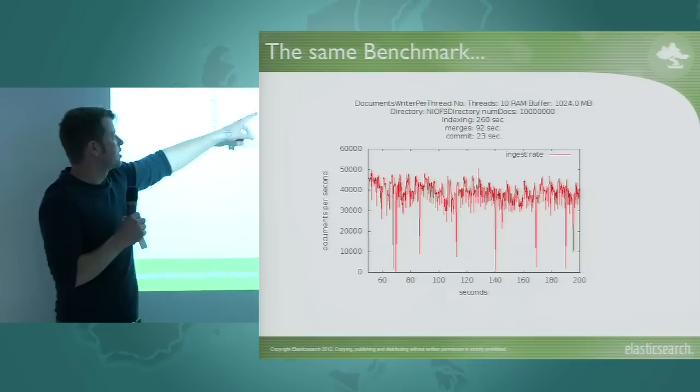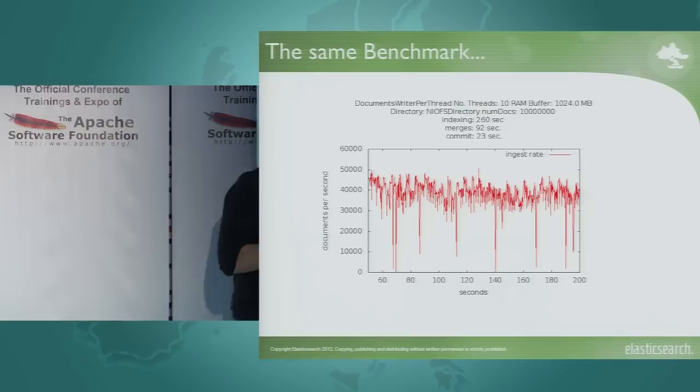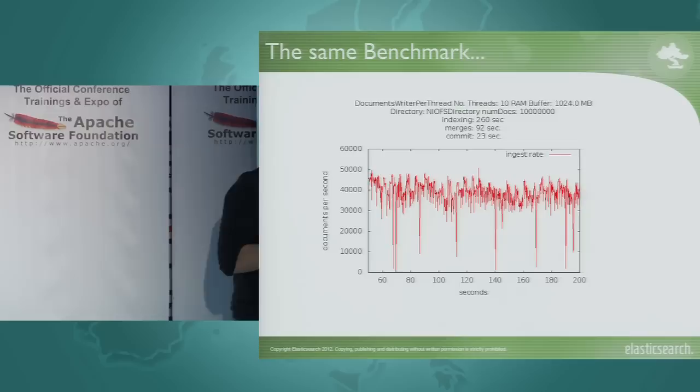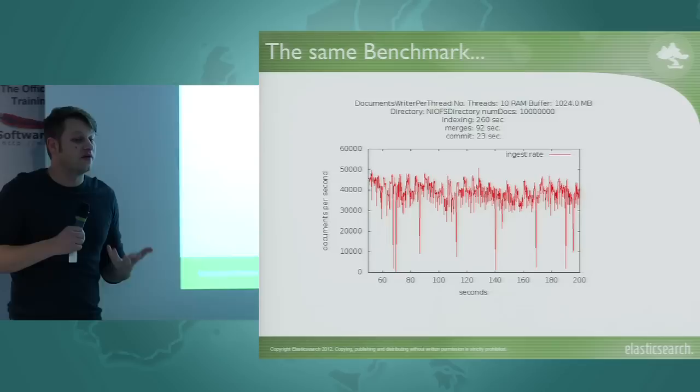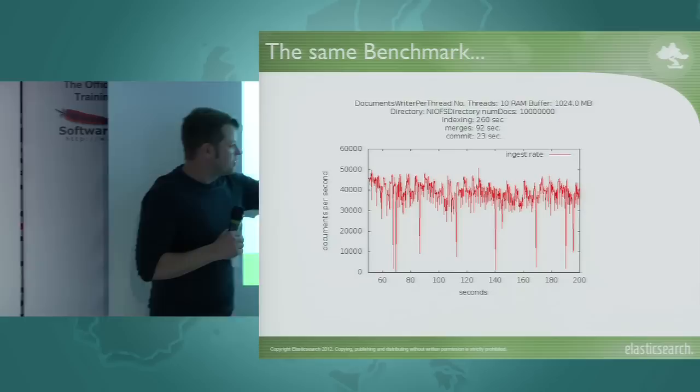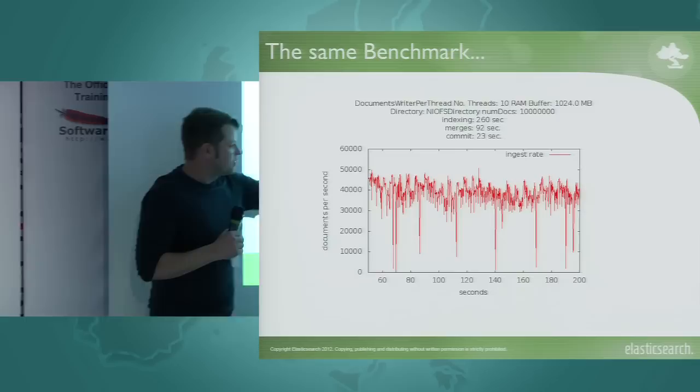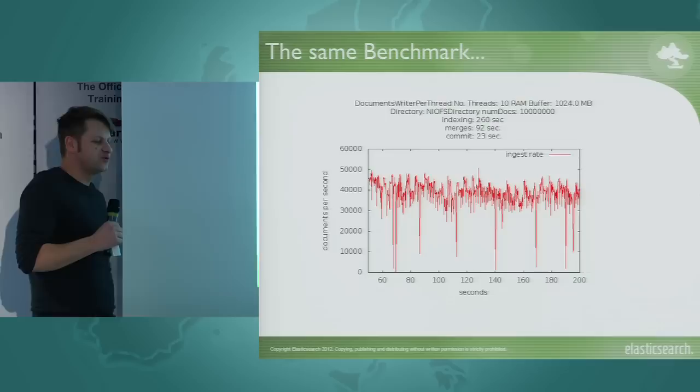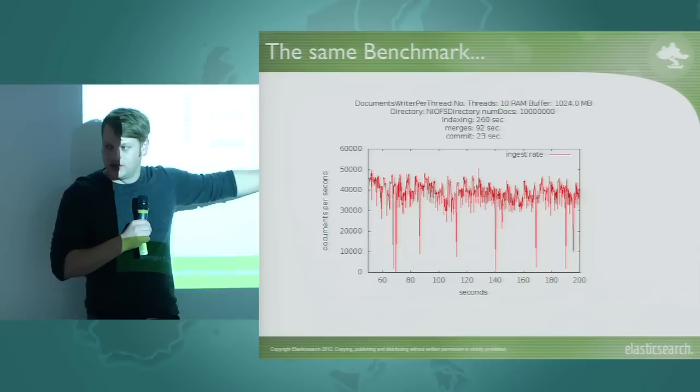With documents-writer-per-thread you get a constant indexing rate, and we gained roughly a 300% performance improvement on highly concurrent hardware. But it turned out that on less expensive hardware without fast disks, it can help even more. You want to make sure your I/O system is used constantly, not idling. I initially ran this benchmark reading the source from the same hard disk as writing, causing little spikes - once I removed that, I got a straight line of document throughput.